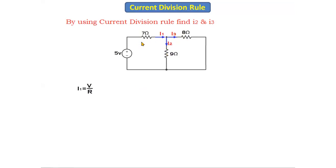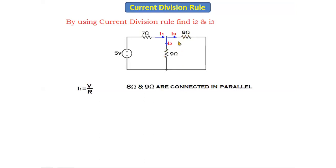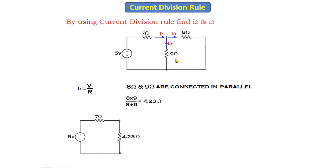Since i1 is the total current, we need to find it first before we can find i2 and i3. i1 equals total voltage divided by total resistance. The total voltage is 5 volts, but we need to find the total resistance. The 8-ohm and 9-ohm resistors are connected in parallel because the current divides through them. Their parallel combination is 8 × 9 / (8 + 9), which equals 4.23 ohms.